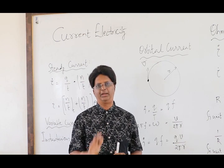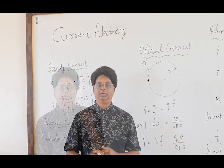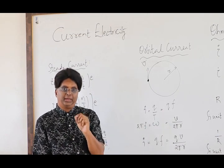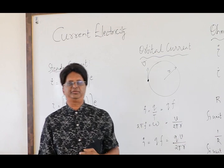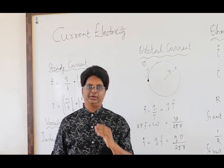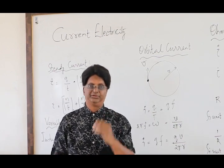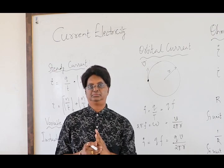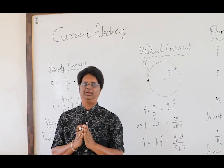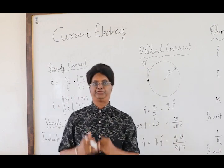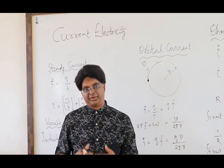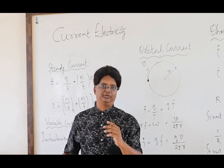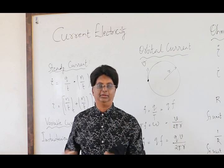Easy scoring you will find in your CET. Now, current electricity — even before we start with the definition of current, first let us see what are the conditions for current. The first condition is availability of charge carriers. The first condition to constitute electric current is availability of charge carriers — the free charges which can move under the influence of an external electric field.